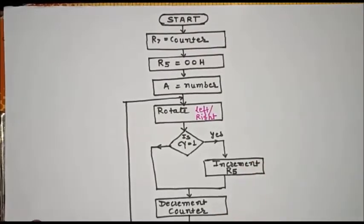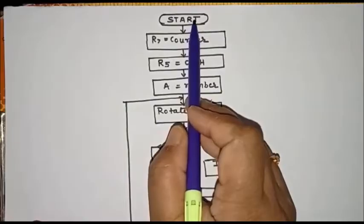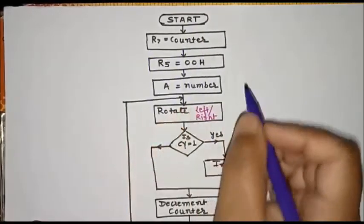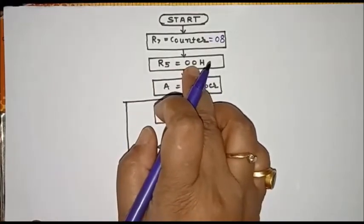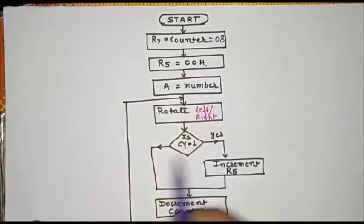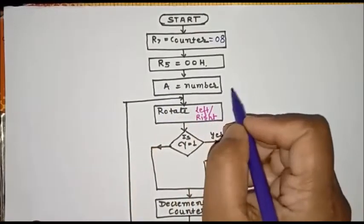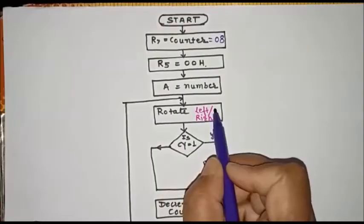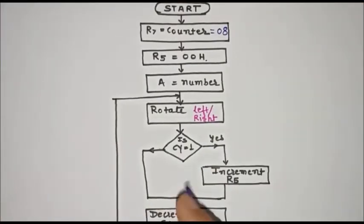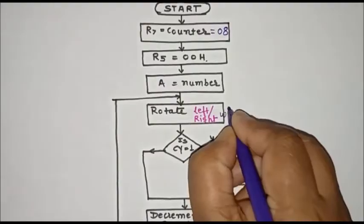Now let us understand the flowchart for writing this program. First is start. We are using R7 as a counter, so we'll initialize this counter with number eight because we want to repeat this operation eight times. The result will be stored in register R5, so R5 is initialized with value zero. Whatever number you want to use for this operation will be stored in the accumulator. Then we'll perform rotate left or rotate right.